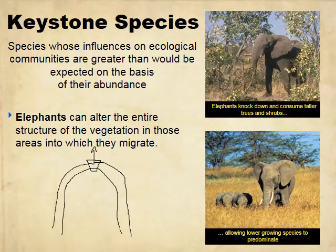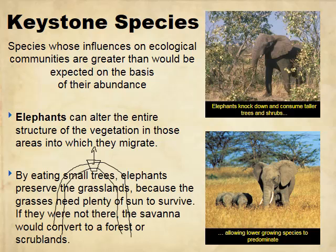An example of a keystone species is elephants. They can alter the entire structure of vegetation, and they preserve the grasslands by eating the small trees, actually keeping the grasslands as grasslands.